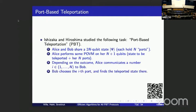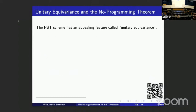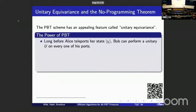Alice does classical communication — in this case some outcome from 1 up to n. Bob receives this information and instead of doing a corrective unitary, he looks at his i-th port — the port corresponding to the outcome of the measurement. Bob can't do nothing because that would violate no-signaling, but we allow him to do something which is essentially not a unitary at all — he just looks at the right port, and that contains the sent qubit.